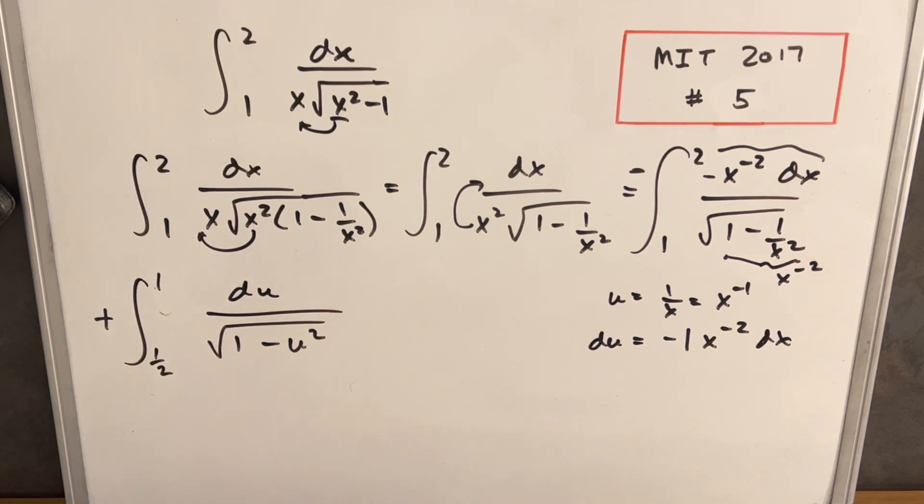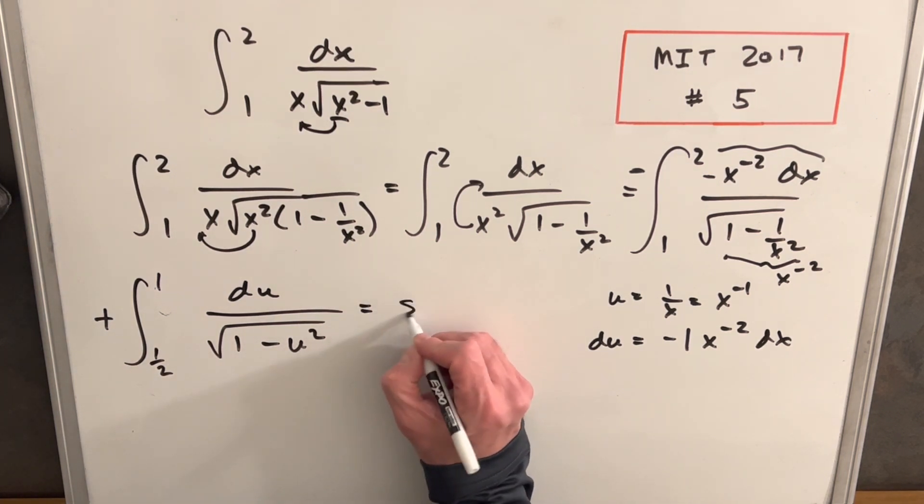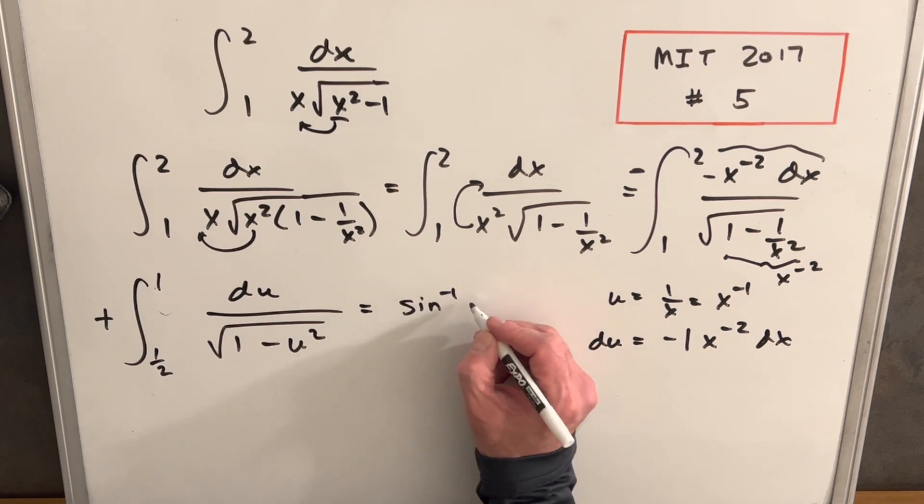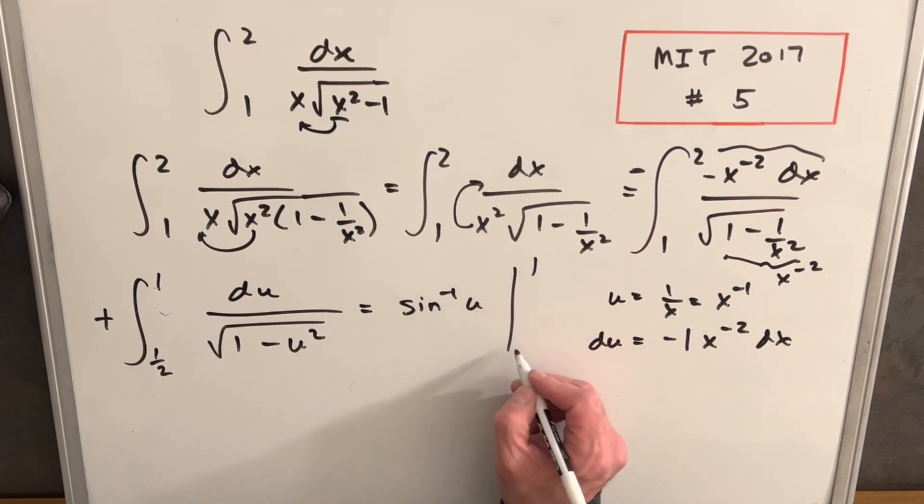Now we're ready to integrate. But this is a very common integral. This is actually going to be inverse sine, or arc sine. Let's move right. This is sine inverse of u from one to one half.